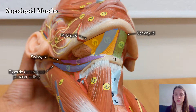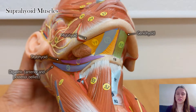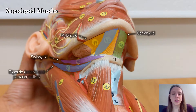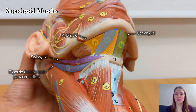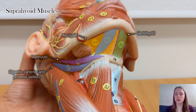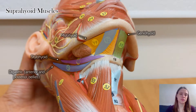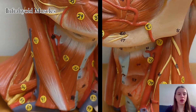All of these muscles will elevate the hyoid because they're above it, so they are synergists to each other. But the anterior belly of the digastric can also work to depress the mandible, making it an antagonist to the masseter and the temporalis — the muscles of mastication which elevate the mandible.